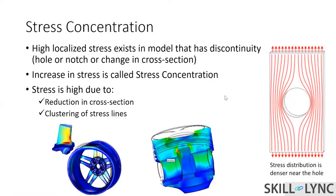Here is an example: a piston which has a stress concentration point. Stress concentration generally develops where there is a reduction in cross-section area, particularly at sharp edges or regions with sharp bridges. As a designer or analyst, whenever you see a design with sharp corners or edges, you can advise that changes need to be made to reduce the stress concentration.